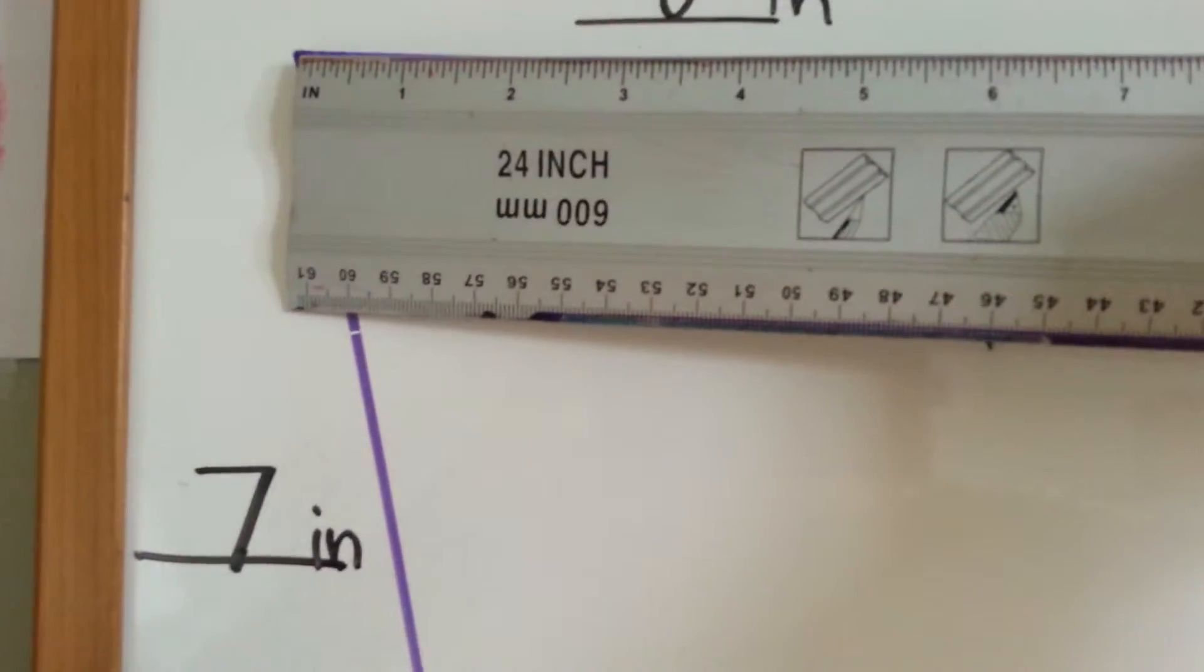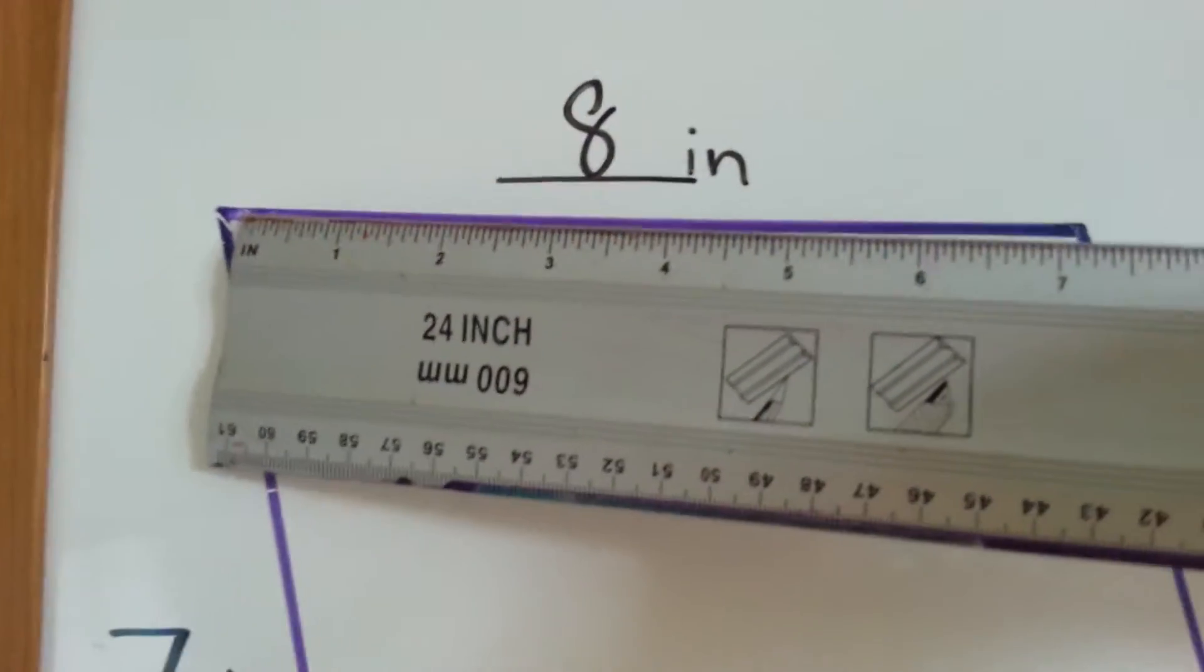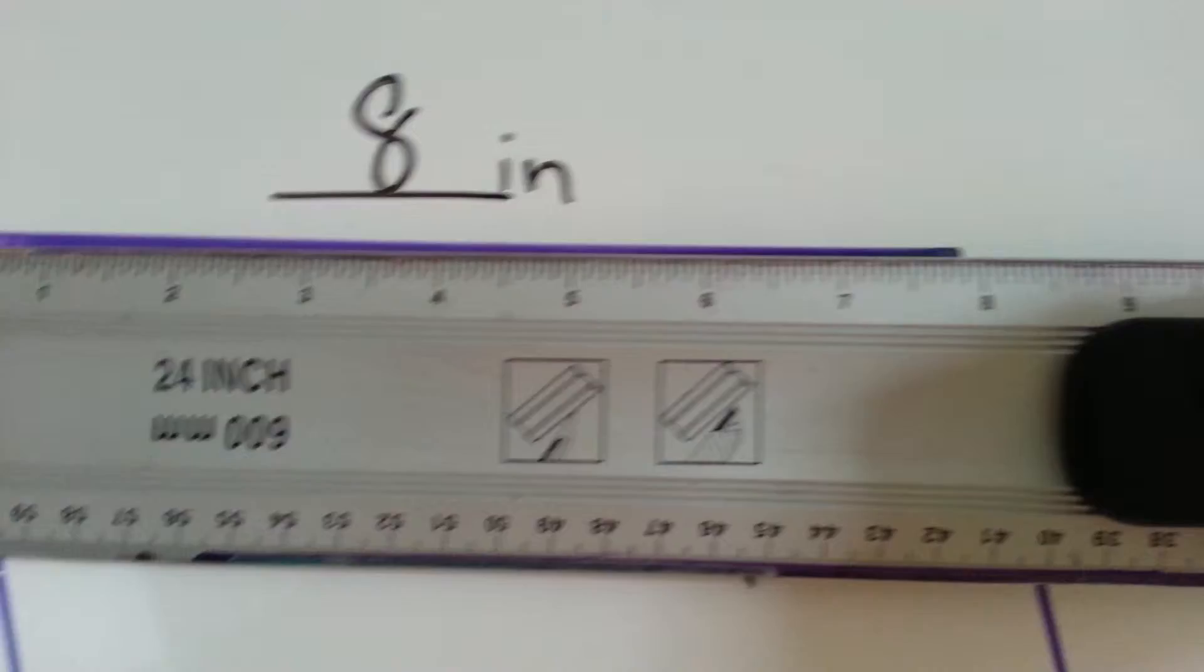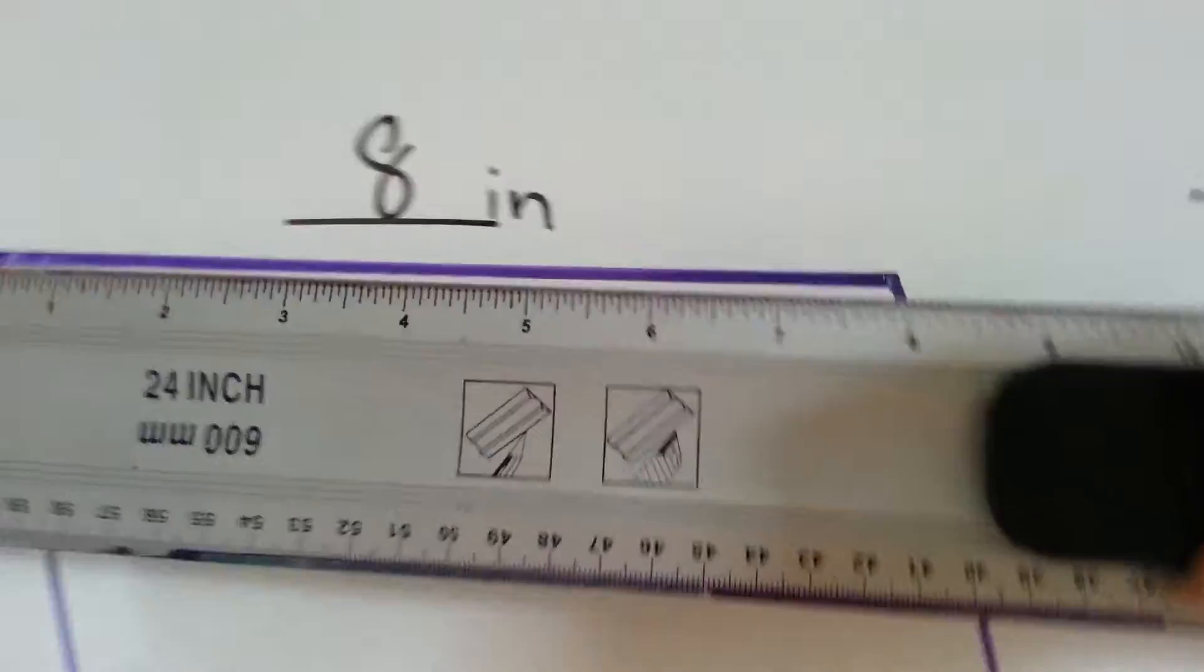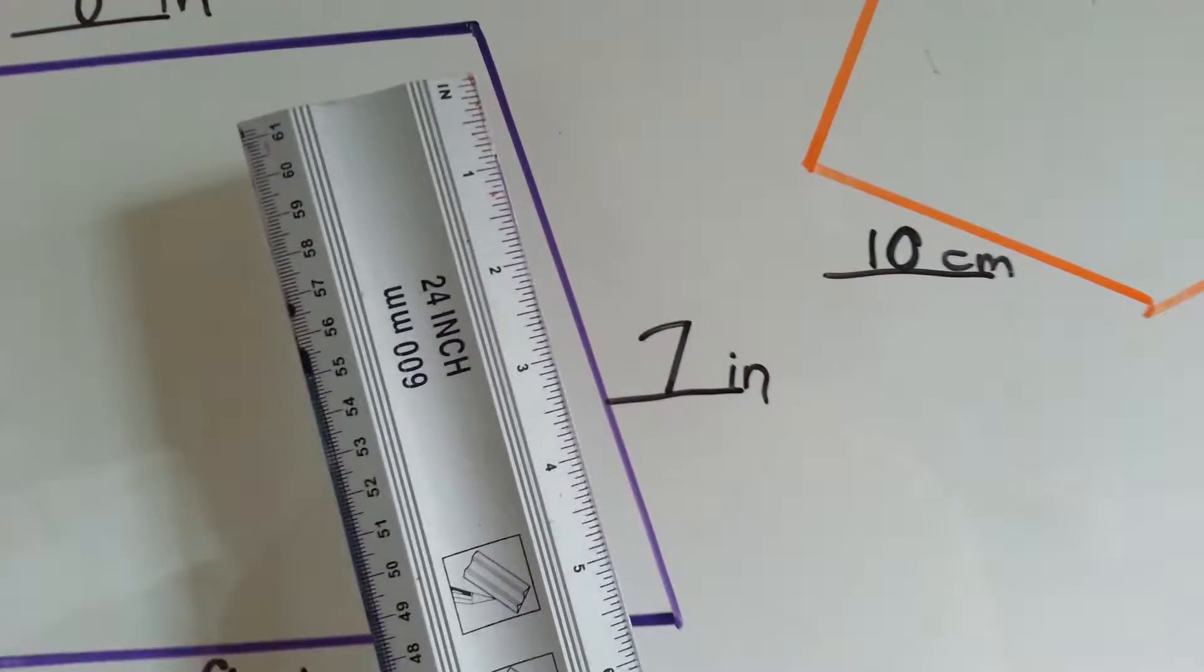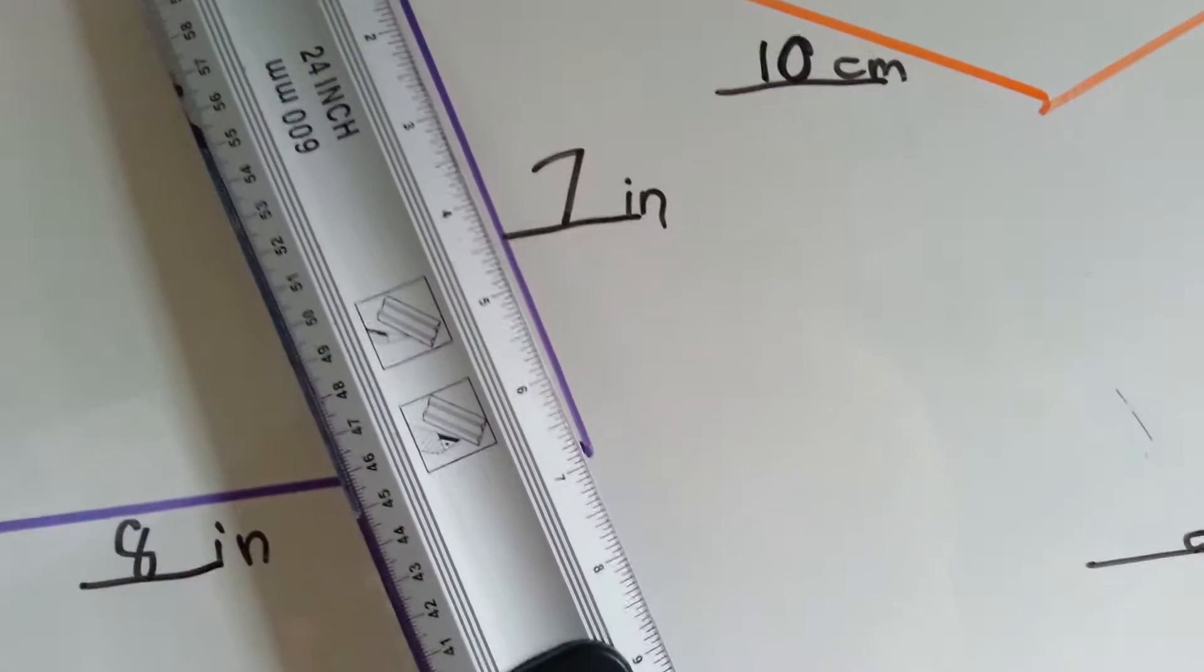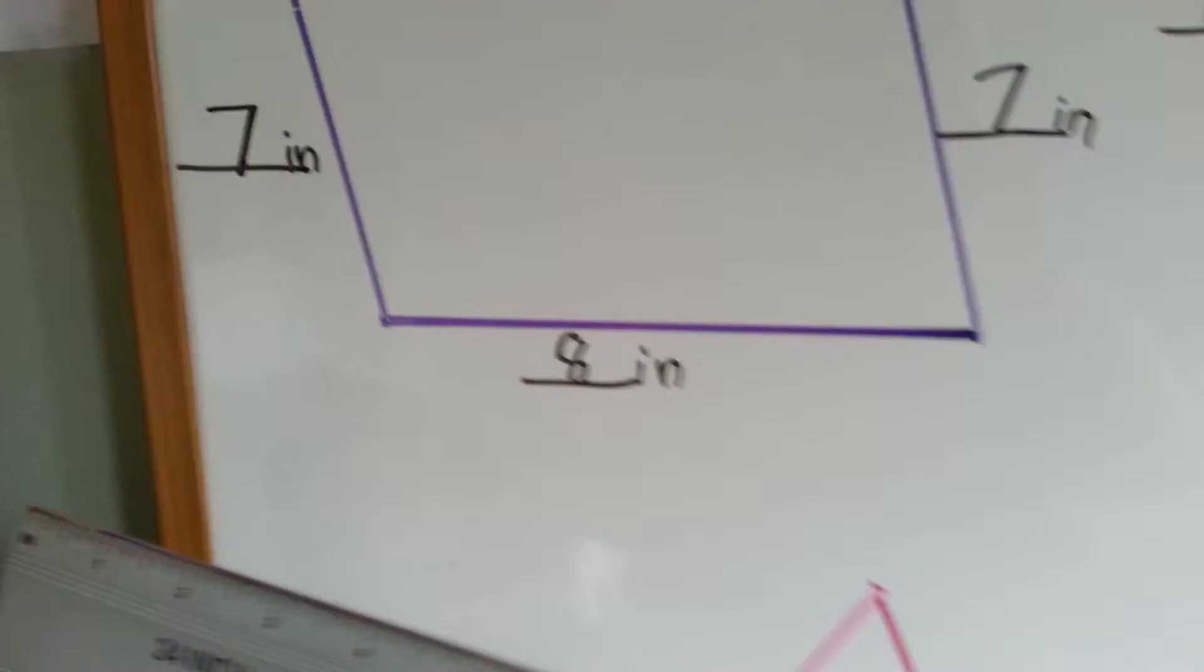Now, you put the edge of the ruler up on this point right here, and you see where the line ends. And it ends at 8 inches. See that? It's 8 inches long. This one is 7 inches. So if I put the ruler there, it ends at the 7 inch mark. It stops at 7.